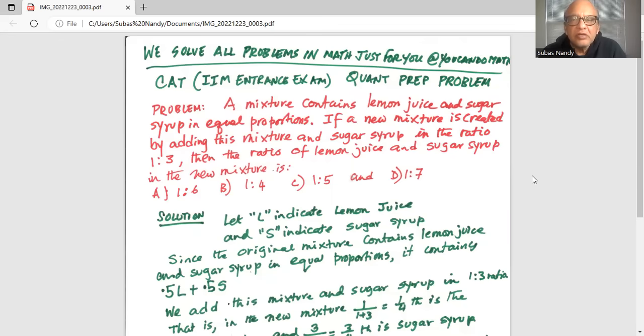The problem states: A mixture contains lemon juice and sugar syrup in equal proportions.